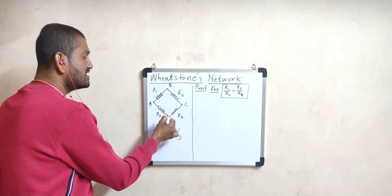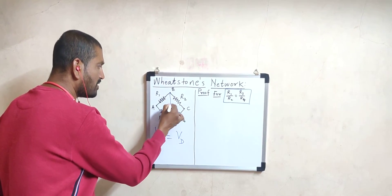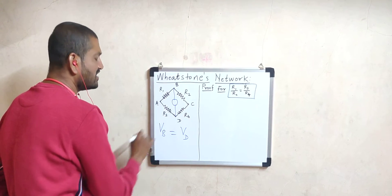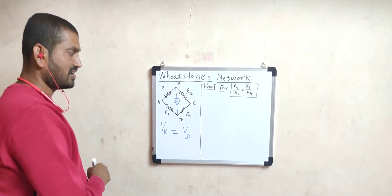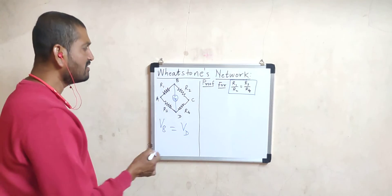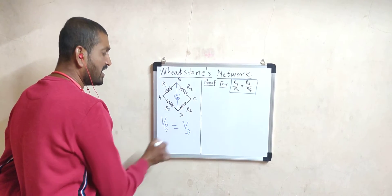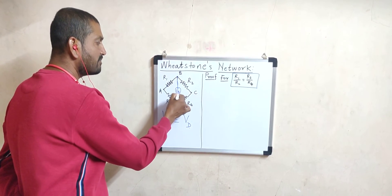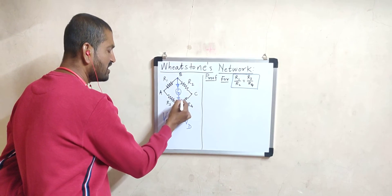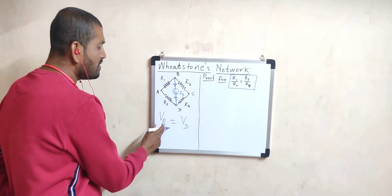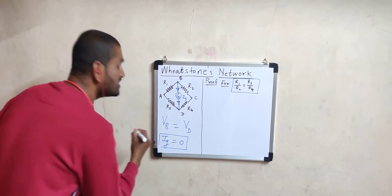When the potential at point B is exactly equal to the potential at point D, and if we connect these two points using a galvanometer — a device to detect current in a circuit — then since there is no potential difference, no current flows through this middle branch. If we represent the current through this middle branch as IG, then when VB equals VD, the current through the galvanometer is zero.